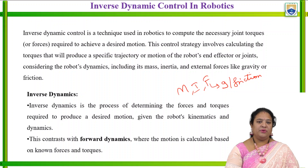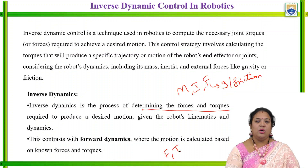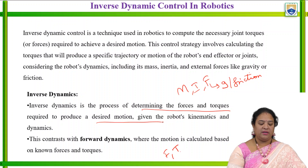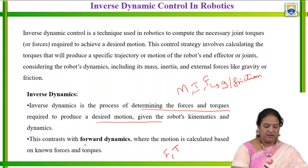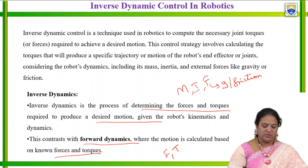In inverse dynamics, it is a process to determine the force and the torque. The inverse dynamics is a torque process used to determine the force and torque, where it requires the desired motion given to the robot kinematics and dynamics. This contrasts with forward dynamics where the motion is calculated based on the force and the torque.